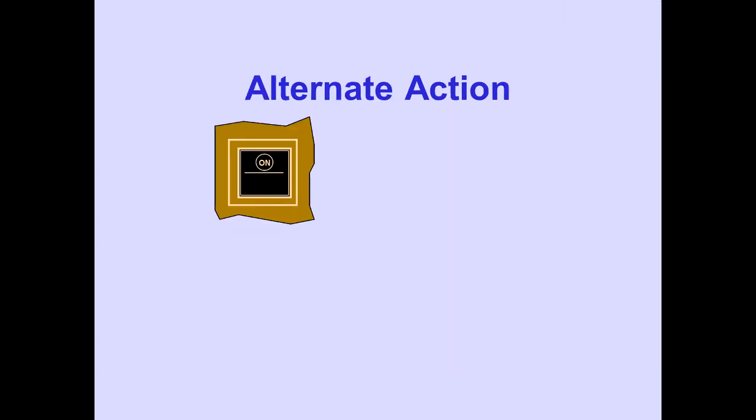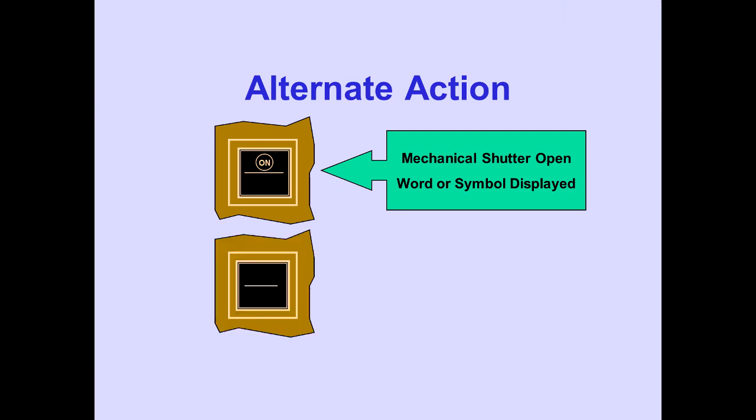Alternate action switches use a mechanical shutter to display switch position. When the switch is in or on, the mechanical shutter opens and a word or symbol is displayed. When the switch is in the off or out position, the mechanical shutter closes, covering the word or symbol.